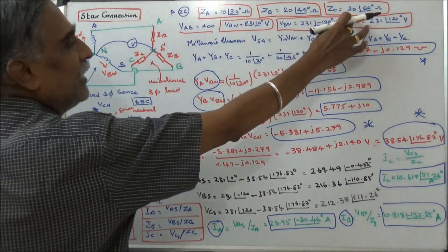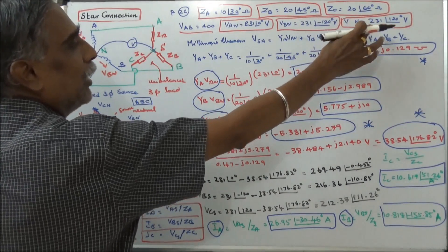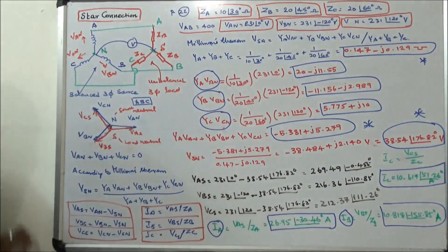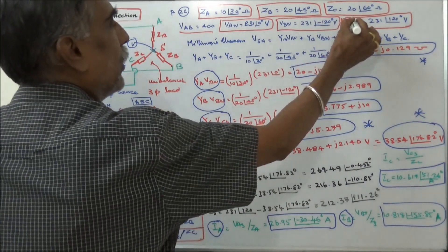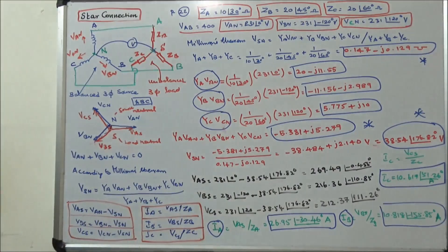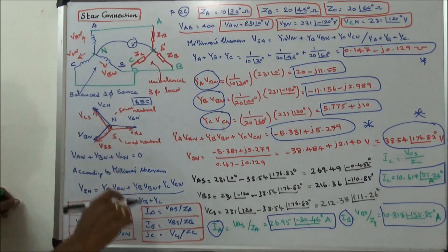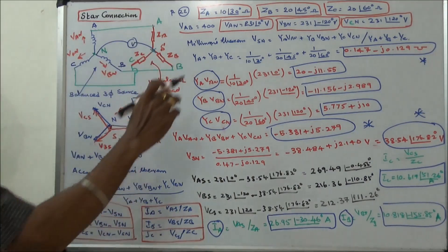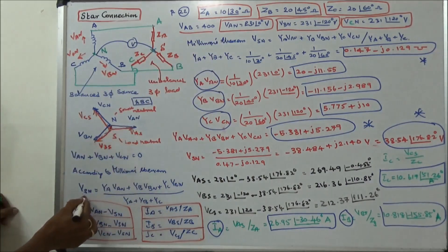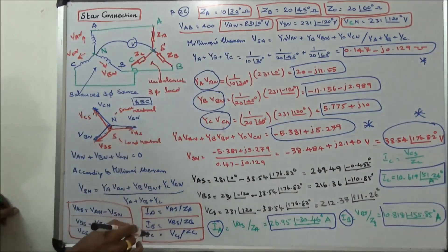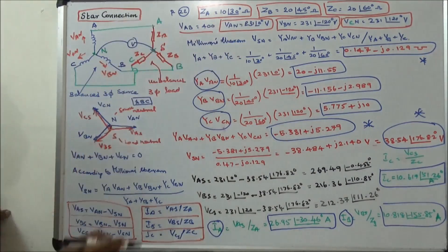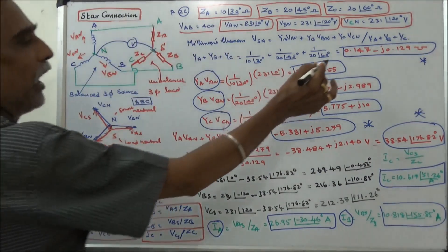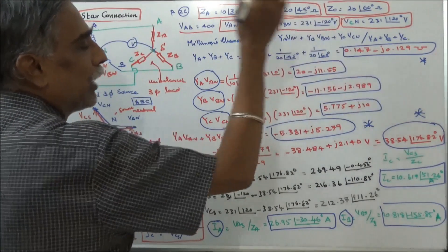VBN equals 231 angle 120 degrees and VCN equals 231 angle minus 240 degrees. According to Millman's theorem, we first calculate the total admittance YA plus YB plus YC, which equals 0.147 minus J0.129.